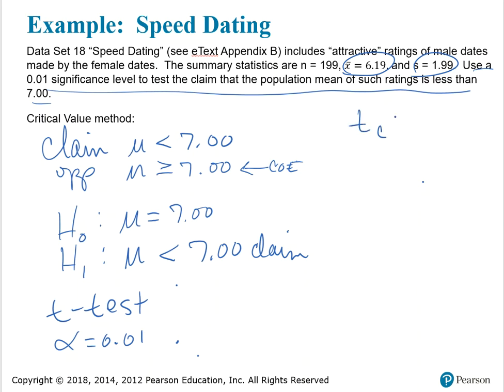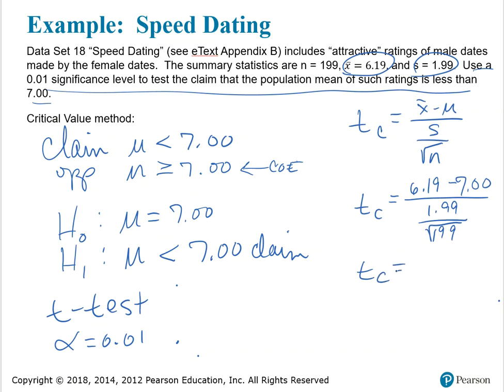To calculate the test statistic t, I'm going to take x bar minus mu and divide that by the standard deviation divided by the square root of n. Plugging those numbers in, I have 6.19 minus 7.00 divided by 1.99 divided by the square root of 199. And plugging that into the calculator, you should get negative 5.742.